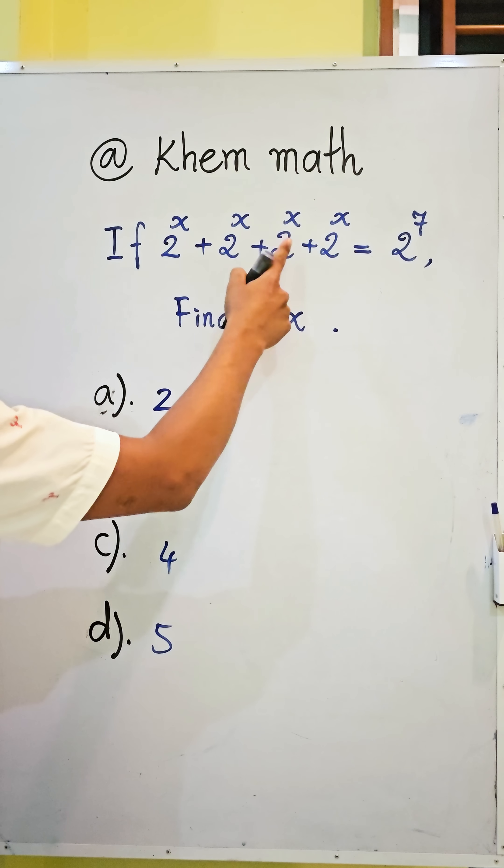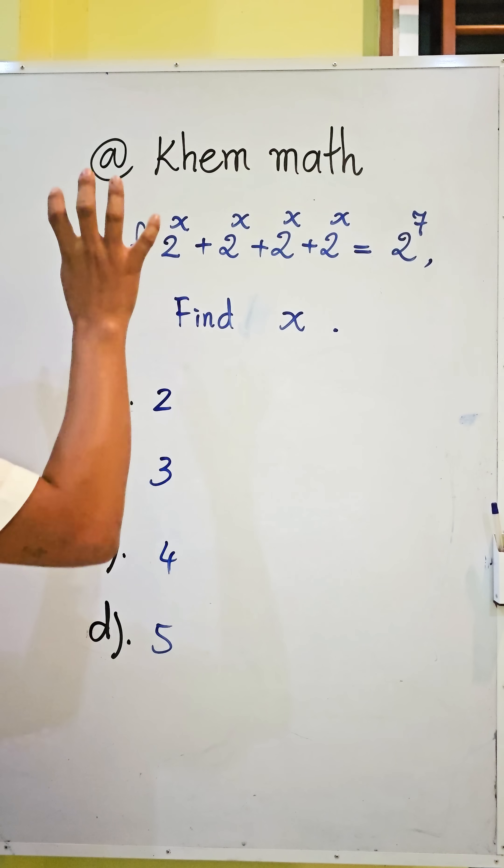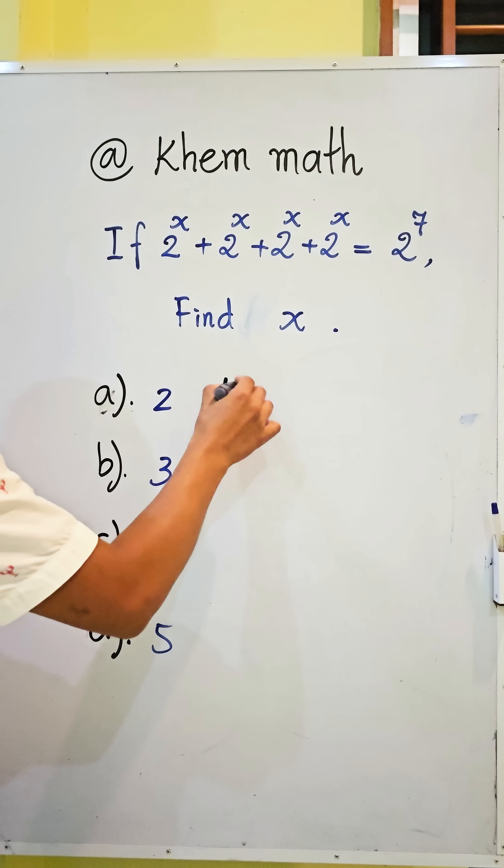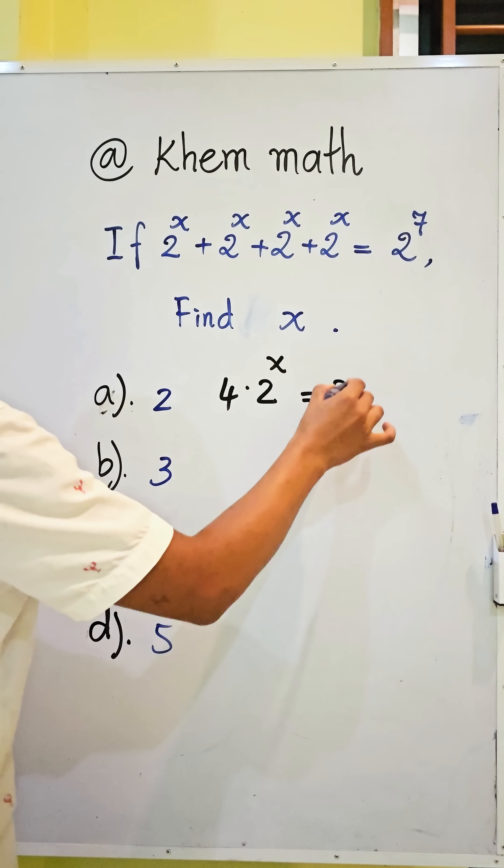2 power x plus 2 power x plus 2 power x plus 2 power x. So it's 4 times 2 power x. So we can write 4 times 2 power x equal to 2 power 7.